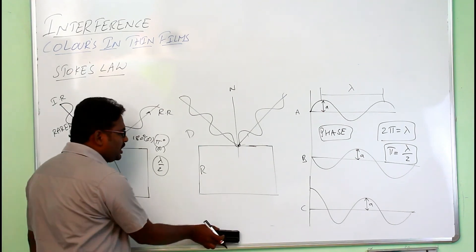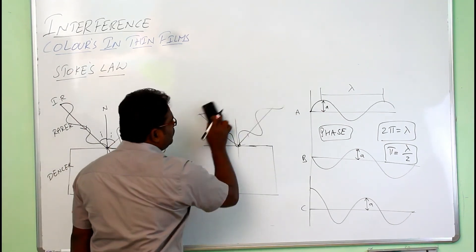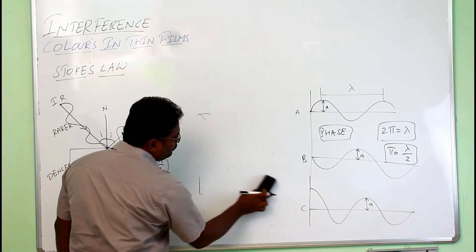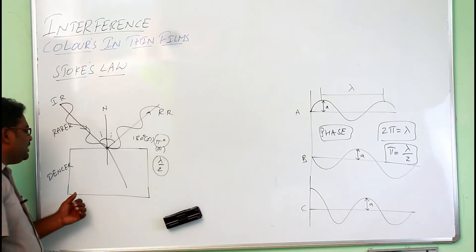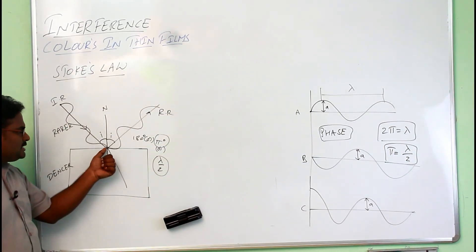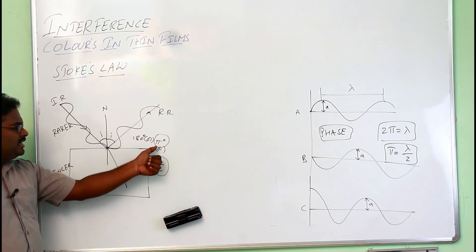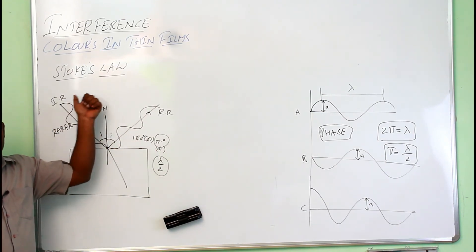Which is not required for us, for the thin film derivation. What we have to consider is, when light is reflecting from denser medium, what's going to happen? There is a phase change of pi degrees or a path change of lambda by 2. This we have to consider.